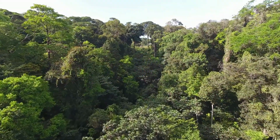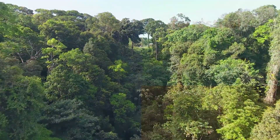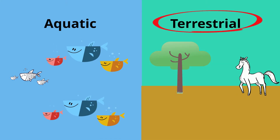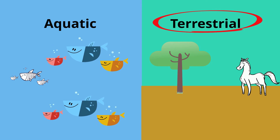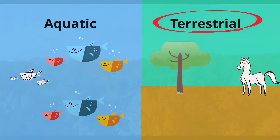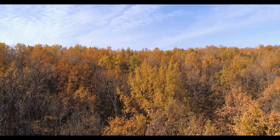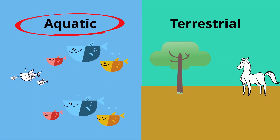Two major types of ecosystems are terrestrial and aquatic. A terrestrial ecosystem is a land-based community of organisms and the interactions of biotic and abiotic components in a given area. An example would be this deciduous forest.